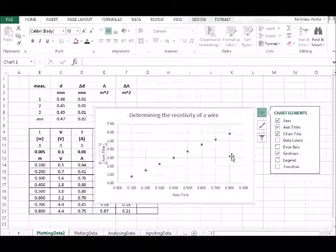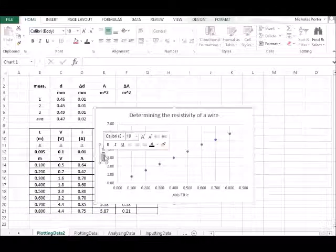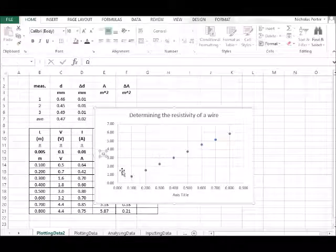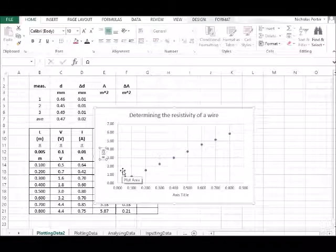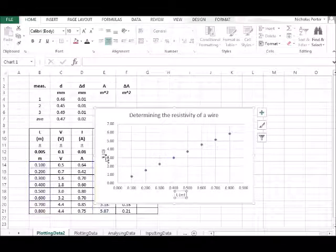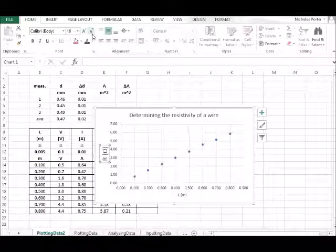Once we've got our graph set up, we can choose graph design, which is in one of the top tabs. From there, we can insert a chart element, so that could be axes labels or grid lines, all those aspects of a graph which we require to be completed.